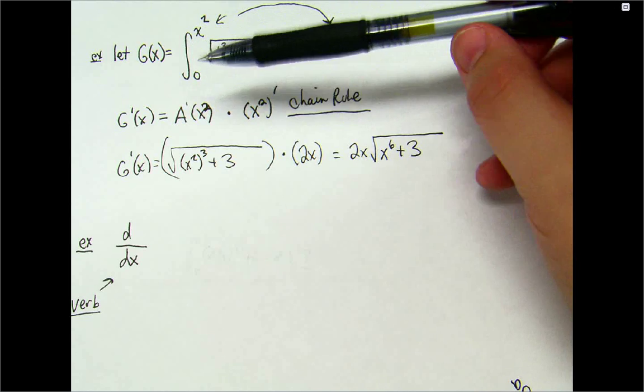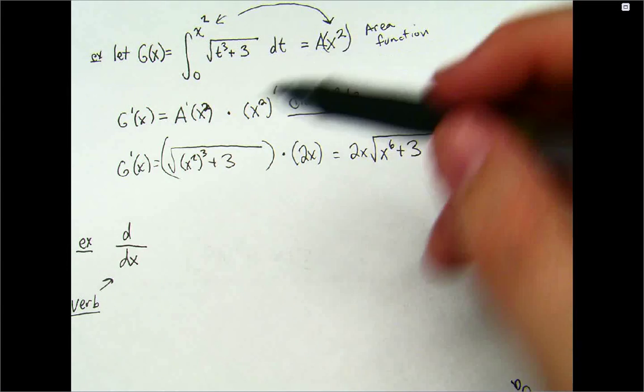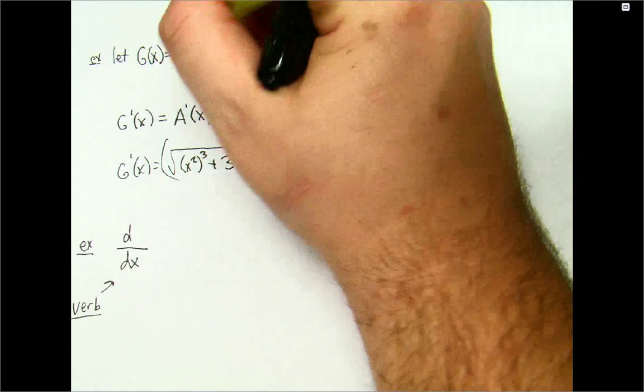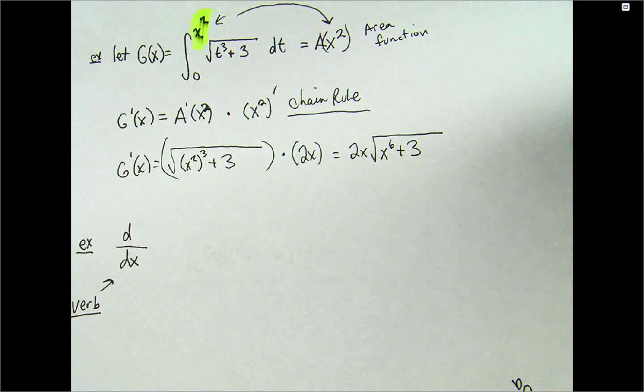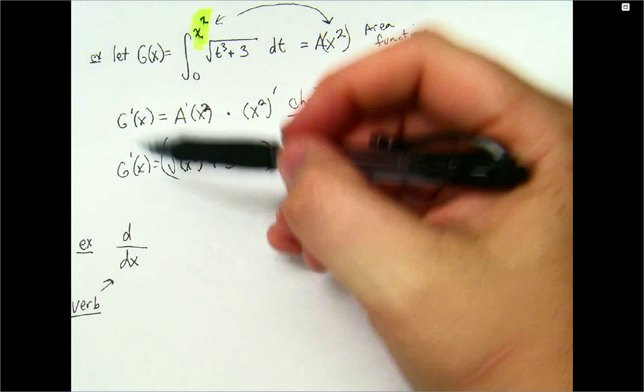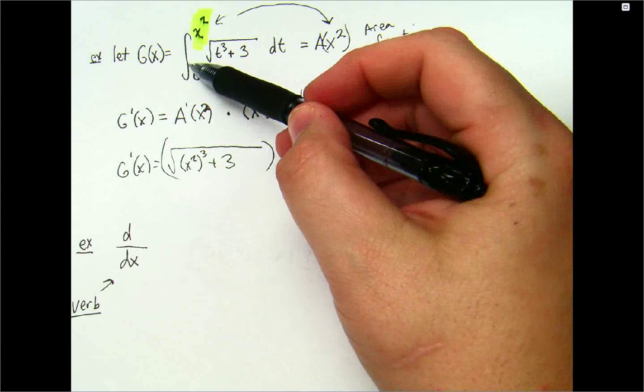But, we have to take into account this upper limit that x squared. Since everything, basically what's happening is everything is being termed of, instead of being in terms of t, it's going to be in terms of the x squared now. So, once we take the derivative of an integral, those two things cancel out.